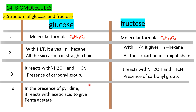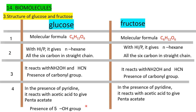Fourth point: in the presence of pyridine, both react with acetic acid to give a penta-acetate. This indicates the presence of 5 OH groups in both glucose and fructose.